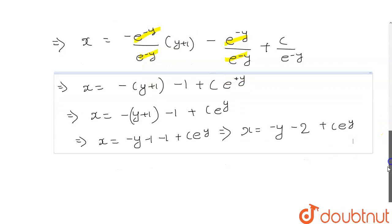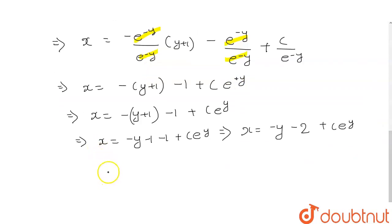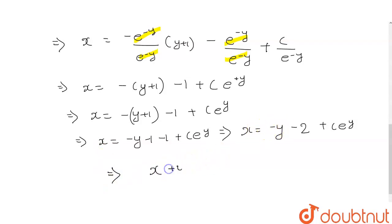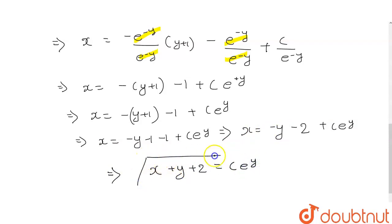So the final result for this differential equation is: rearranging, x + y + 2 = c·e^(y). This is the required general solution for the given differential equation. Thank you.